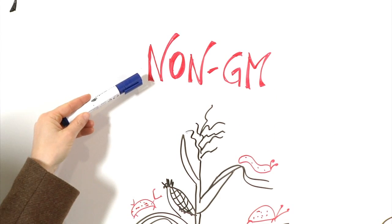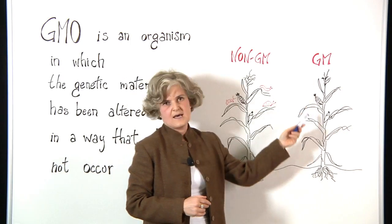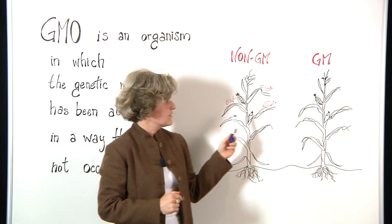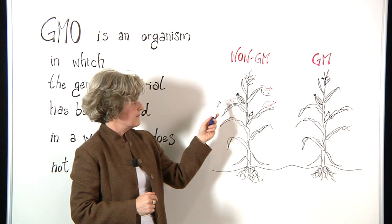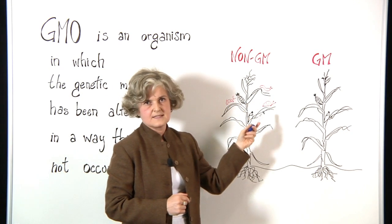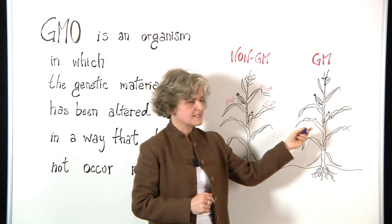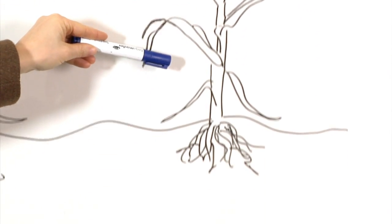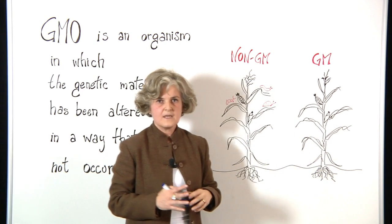Here you see two drawings. We have the non-GM maize plant and we have the GM maize plant. What is the difference between the two? On the non-GM maize plant, we have insects that can feed on its leaves, whereas these are absent here because this plant is resistant and the insects cannot feed on its leaves.